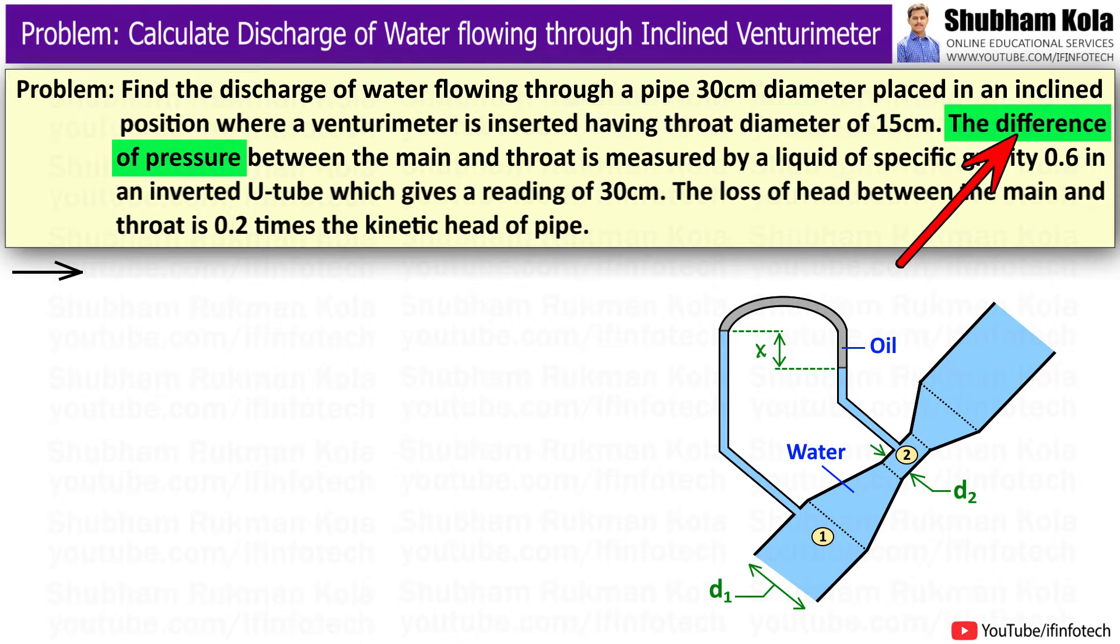The difference of pressure between the main and throat is measured by a liquid of specific gravity 0.6 in an inverted U-tube, which gives a reading of 30 cm. The loss of head between the main and throat is 0.2 times the kinetic head of pipe.